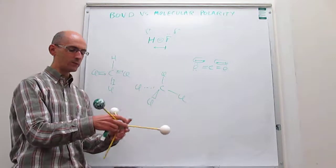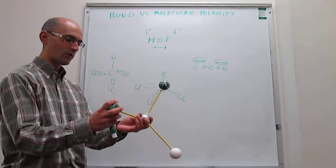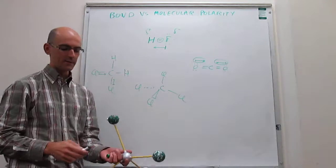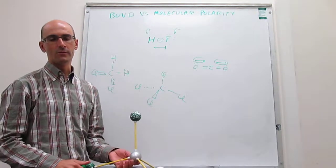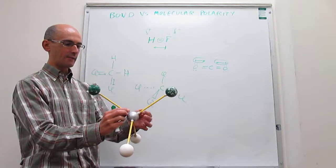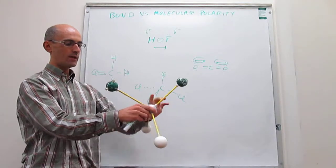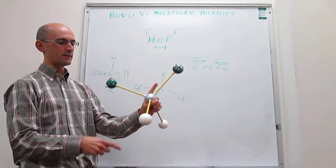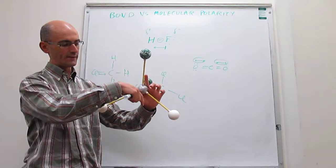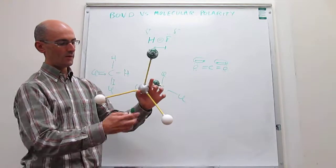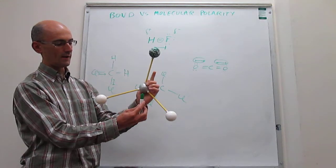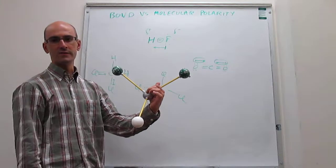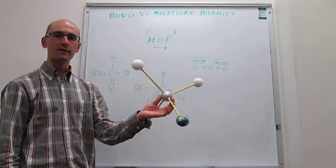We can continue with substitutions to learn more about polarity. Making this molecule dichloromethane — CH2Cl2 — and using the same arguments as for carbon tetrachloride, we see there is no cancellation of dipole moments, so this molecule is also polar. The two C–H bond dipole moments point upward, and the two C–Cl bond dipole moments also point upward with a larger magnitude. There is no cancellation, so dichloromethane is a polar molecule.